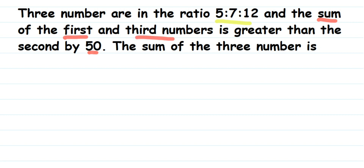We have to find the numbers. Since numbers are given in the ratio, we're going to take a variable x and take the numbers as 5x, 7x, and 12x. We take a variable because ratios are always given in reduced form — the lowest form — so there could be a common factor between them, and that is the reason we are taking a variable x.